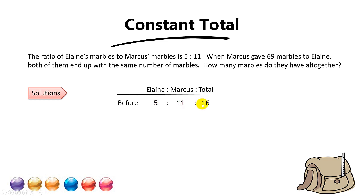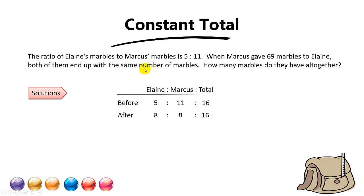Can you guess what the after-ratio is? The answer is 8 to 8. Why? Because the total is unchanged, which is 16 units, and since they end up with the same number of marbles, you take 16 divided by 2, which gives 8. So the after-ratio is 8 to 8.